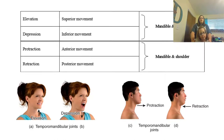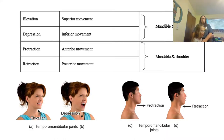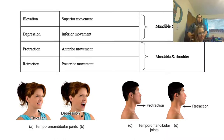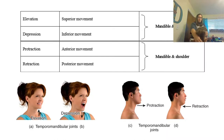Then we have protraction and retraction. Protraction is an anterior movement — this is when you're moving your chin forward. You can also do protraction with your shoulders where you move them forward — not up, but forward. Retraction is the opposite: if the chin is protracted out, we bring it back in. Same thing with the shoulders — if they've been pulled forward, we want to straighten up. This would be like having good posture, pulling your shoulders back.